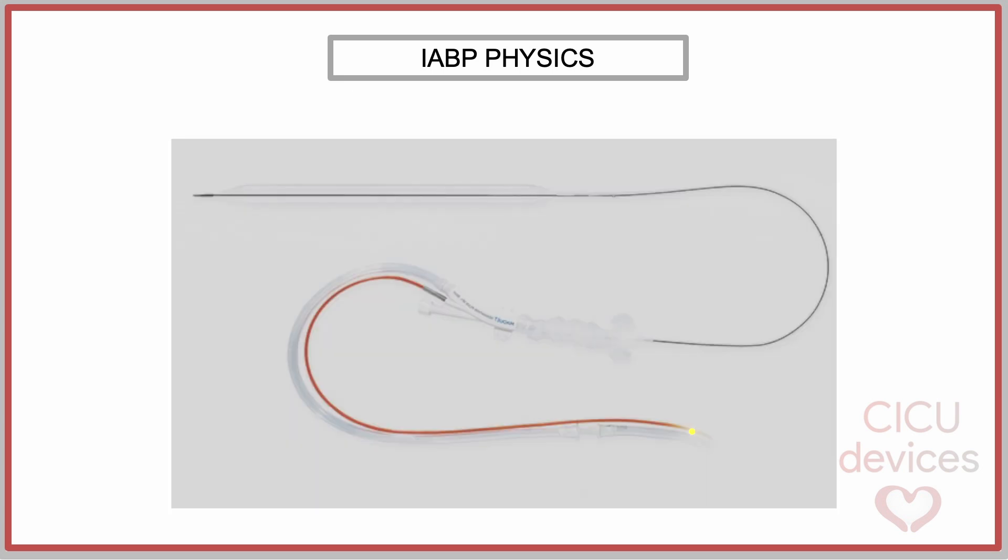In the case of the fiber optic sensor in the IABP, the light beam is generated in the console and travels along the catheter until it reaches the sensor positioned at the tip. There, it is reflected as previously described and then returns to the console, where it is detected by a photodetector.